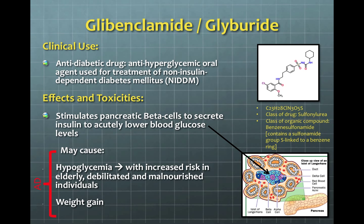Glibenclamide, or glyburide, is an oral anti-diabetic drug that is used for the treatment of non-insulin dependent diabetes mellitus. Its chemical structure is shown here on the right and it belongs to a class of drugs called sulfonylureas. It stimulates pancreatic beta cells to secrete insulin in order to decrease blood glucose levels and it may cause hypoglycemia and weight gain.